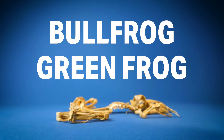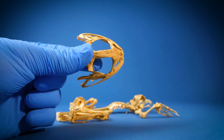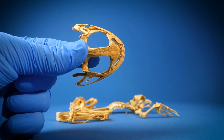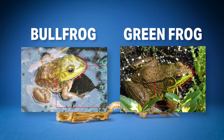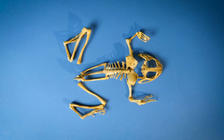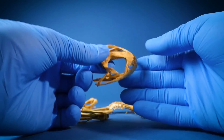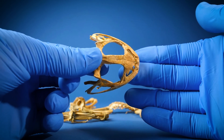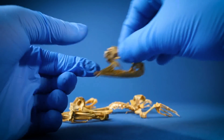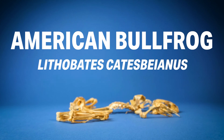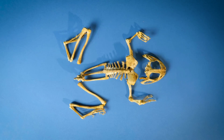To distinguish between these two frogs, we have to look once again at the skull — specifically the shape of the snout. If you look at a bullfrog, the snout is a little bit more rounded. A green frog has a much more pointed snout. Comparing it to ours, I think this skull is a little bit more rounded than pointed, which would mean that this is an American bullfrog, Lithobates catesbeianus. That's our best guess — let me know if you agree or disagree in the comments below.